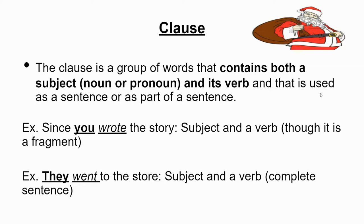A clause is a group of words that contains both the subject — which is a noun or pronoun — and its predicate, hence verb. So clauses need a subject and a predicate, and it's used as part of the sentence. A clause is going to be part of a sentence. It can, depending on the type of clause, be the whole sentence. We'll talk about that more.